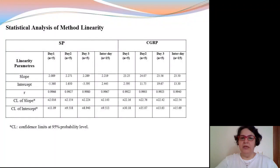In this study, a new, highly sensitive, reliable, selective, and rapid LC-MS-MS method has been developed and validated for determination of Substance P and CGRP using a triple quadruple tandem mass spectrometer in rat brainstem tissues.